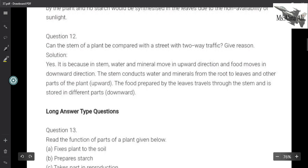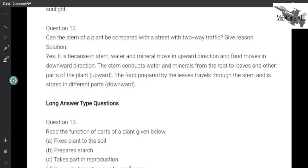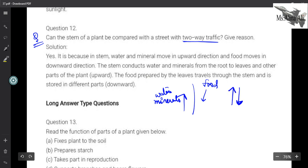Next question says, can the stem of a plant be compared with a street with two-way traffic? This is a very important question. I had asked you in the question of the day: what is going up and what is coming down in a stem? In the stem, the water and the minerals both go up, and when the food has been prepared, the food comes down to different parts of the plant. So that is in both directions. That is why stem can be compared with a two-way street.